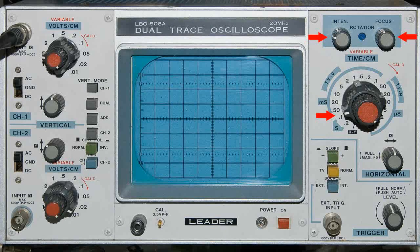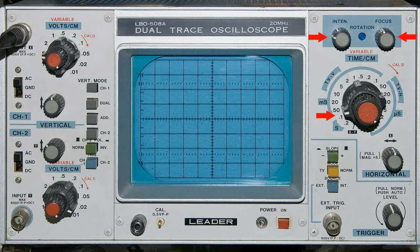This is the time-based control and where that is set is depending on what we want to see and also the frequency of the signal. This is the horizontal position control so we can move the trace from side to side.